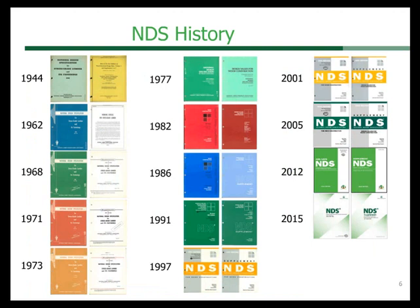For those of you interested, on our website — awc.org — you're able to download a free electronic version of our publications, including more recently the 2015 NDS and the Wind and Seismic Provisions. The only thing is it's a read-only PDF and it does not include the commentary, but it does have the rest of the publication.